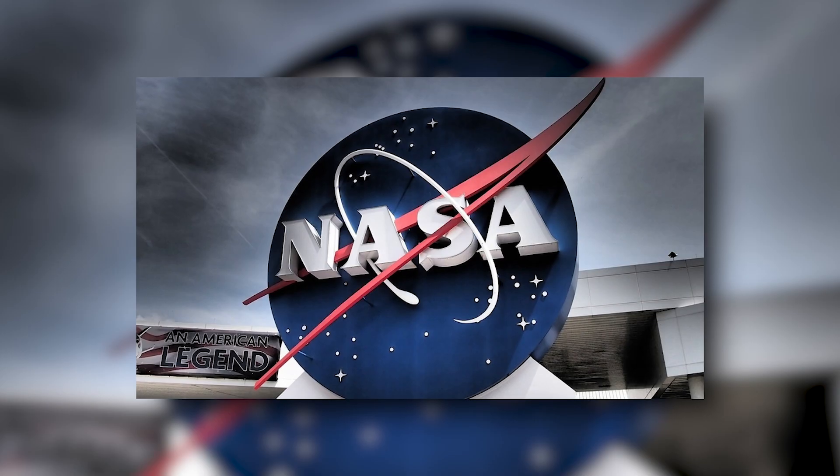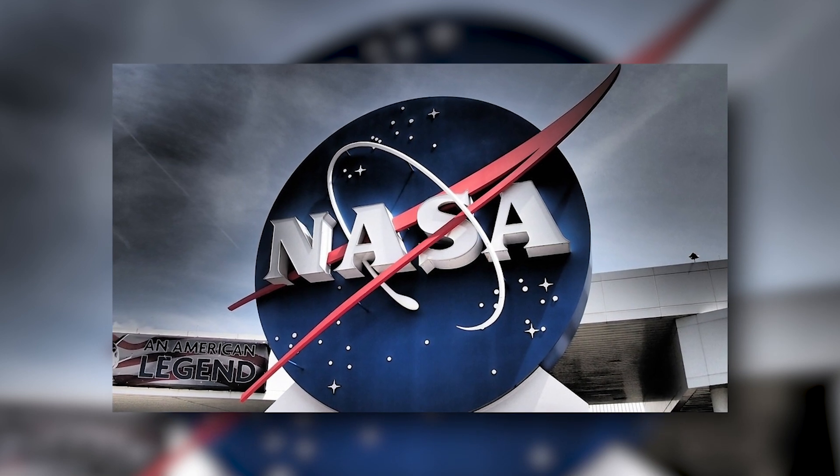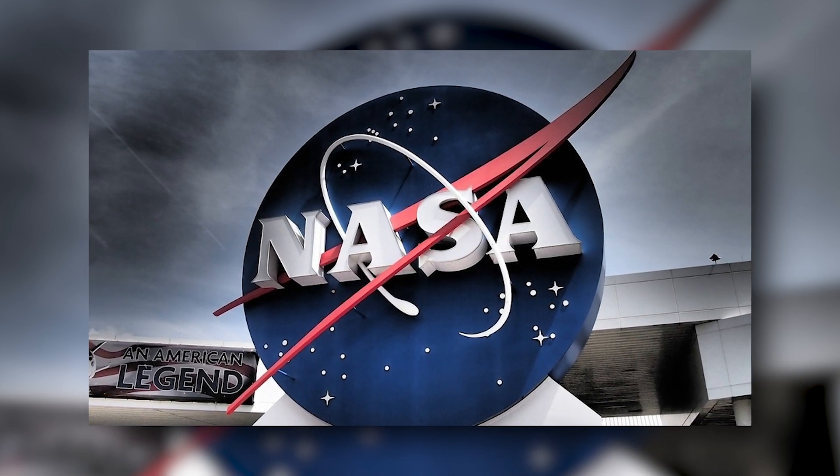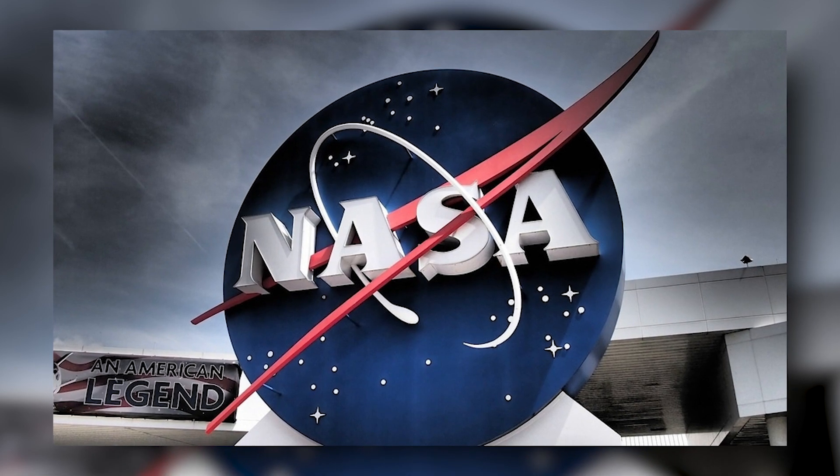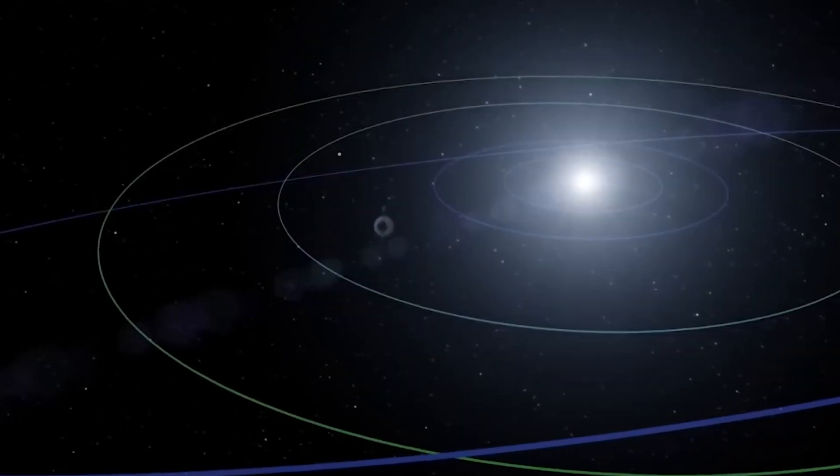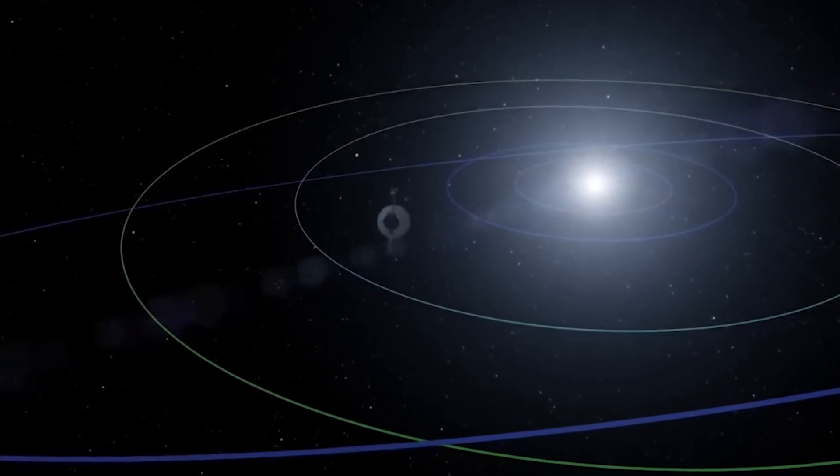Voyager 1, launched by NASA in 1977, is a prime example of space exploration, examining the outer reaches of our solar system and beyond. By examining data from probes through outer space, the God Equation provides a deeper understanding of the universe and its fundamental forces.